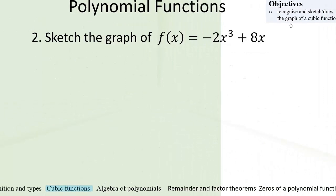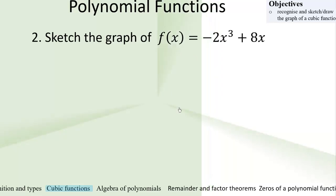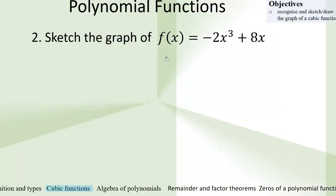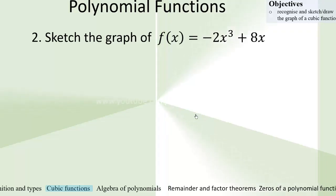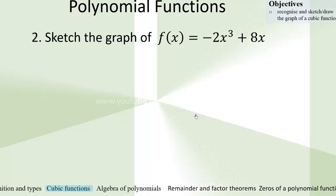Here is a question for you to try: sketch the graph of f of x equals negative 2x cubed plus 8x. You can check the solution in the video entitled polynomial functions — solution to trial questions — in this playlist. Thank you. Please don't forget to share this video, like it, and subscribe to this channel.